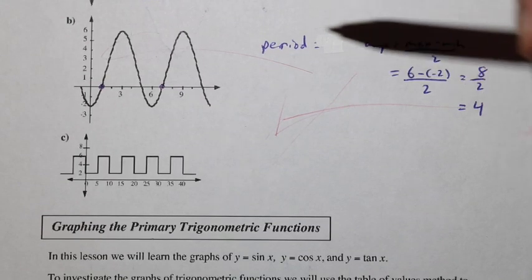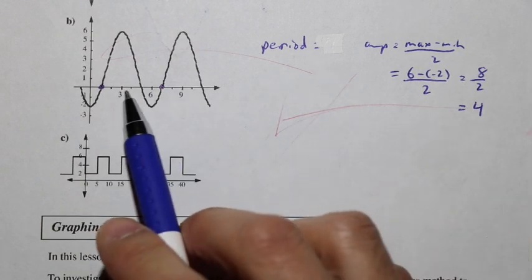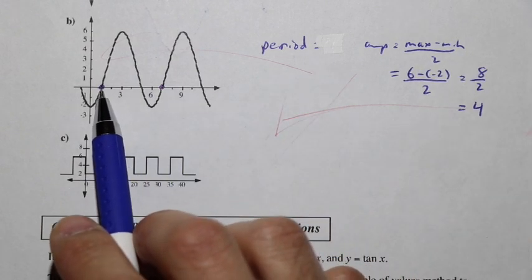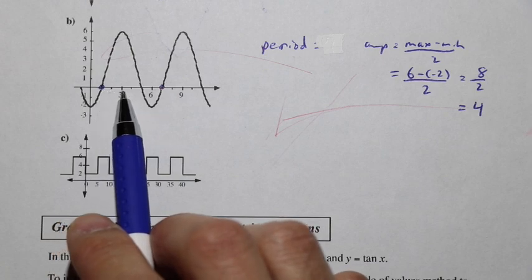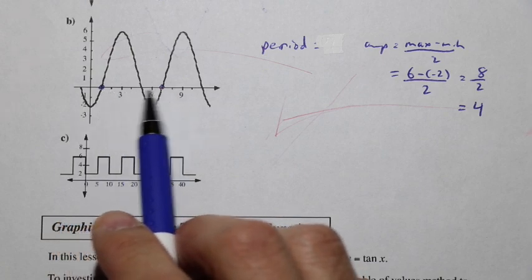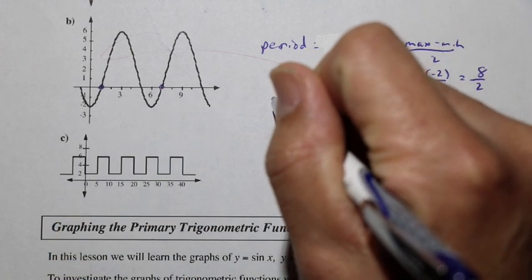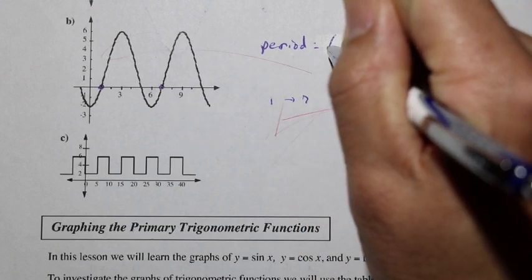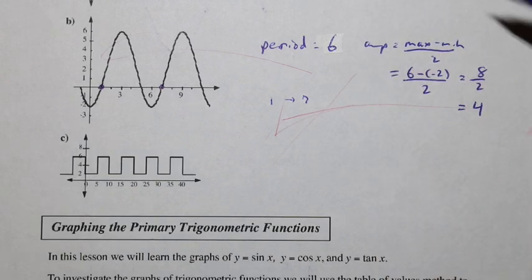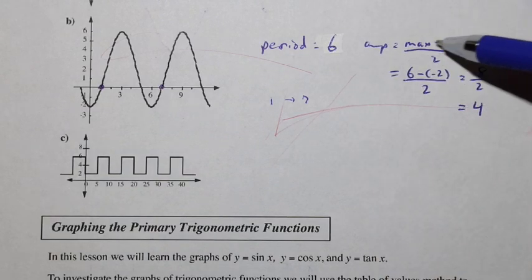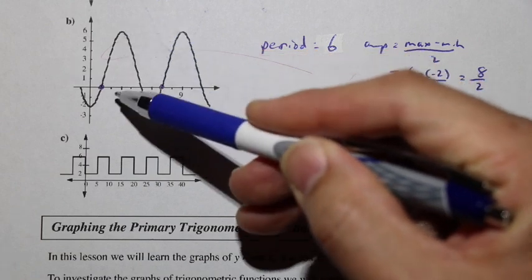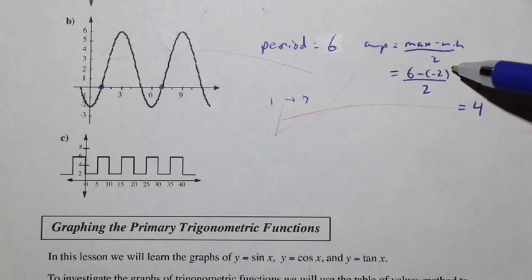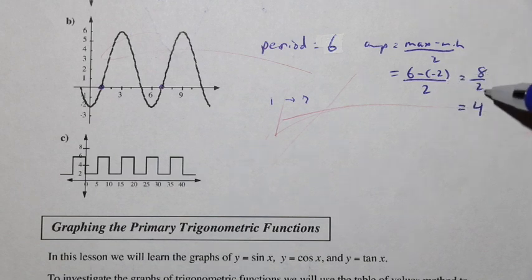So let's review part B here again. We're going to look at the period here, and if we take a look at this point here, it looks like this point is 1, and then 2, 3, 4, 5, 6, and 7. So we have a difference here between 1 all the way to 7. 7 minus 1, that is 6. The period is 6. If we take a look at the amplitude, it's maximum minus minimum. We have the maximum of 6 minus the minimum of negative 2. So 6 minus negative 2, divided by 2, that's 8 over 2, and the amplitude is 4.